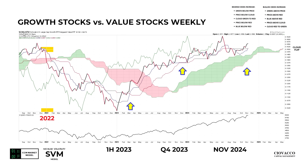Now let's take the same concepts and apply them to a ratio chart — growth stocks SCHG relative to VTV value stocks on a weekly chart. In 2022 we get that negative cross where blue drops below red, and bad things happen in the stock market — we're in risk-off mode. We get a clear and sustainable cross the other way in early 2023, and the stock market once again does well.